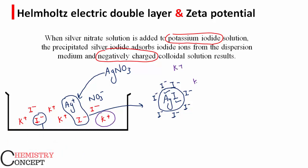So these positively charged potassium ions come and surround this negatively charged silver iodide colloidal particle and form a circular layer around it. This layer of potassium ion is almost fixed. That means it doesn't move because of attraction by the iodide ions present on the surface of the silver iodide colloidal particle.